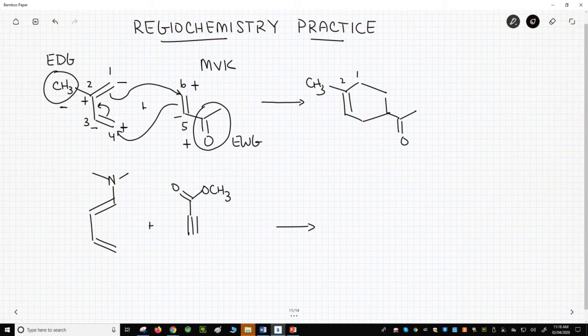Let's number everything. This is the 1-4 product because the EDG and EWG are four carbons away.